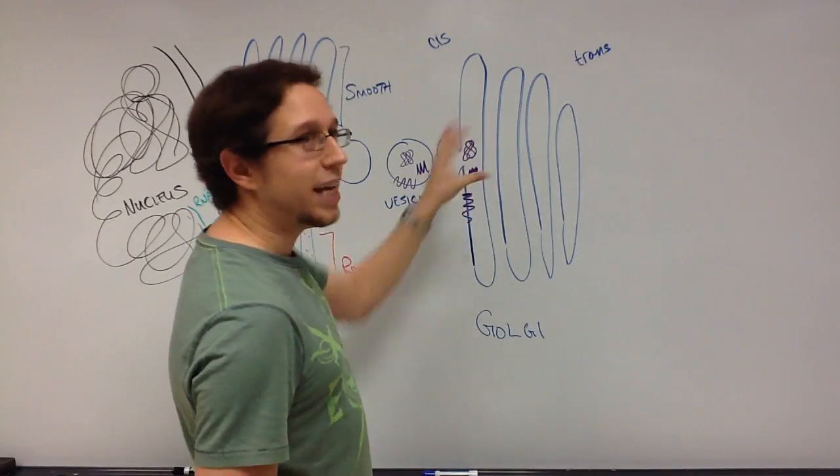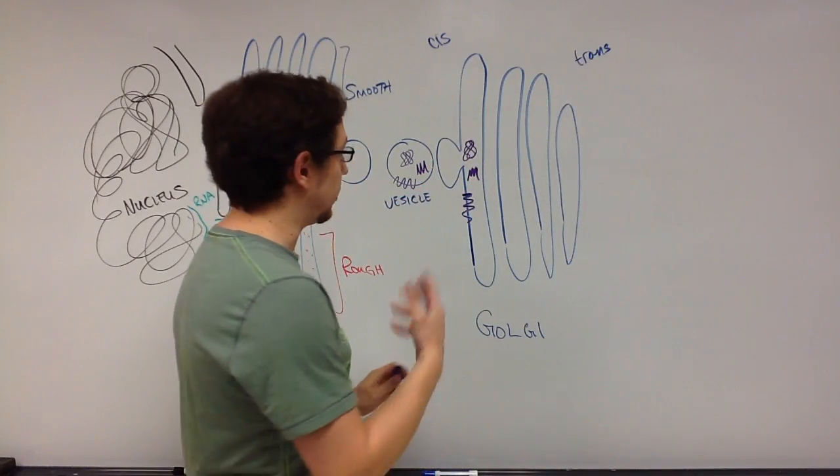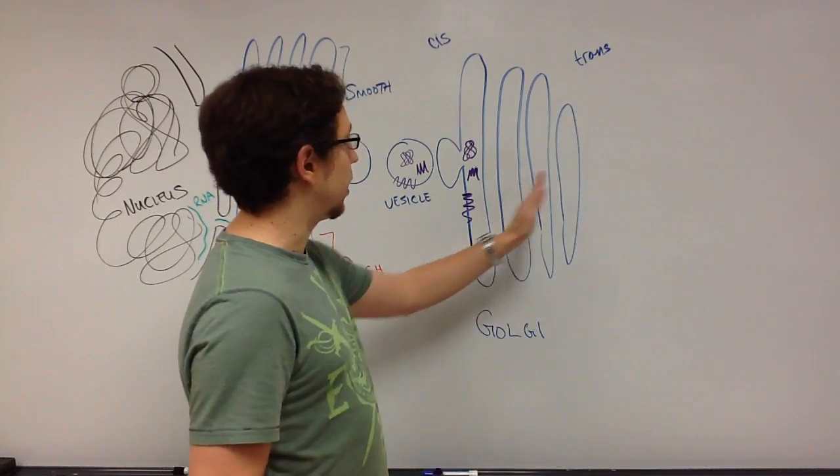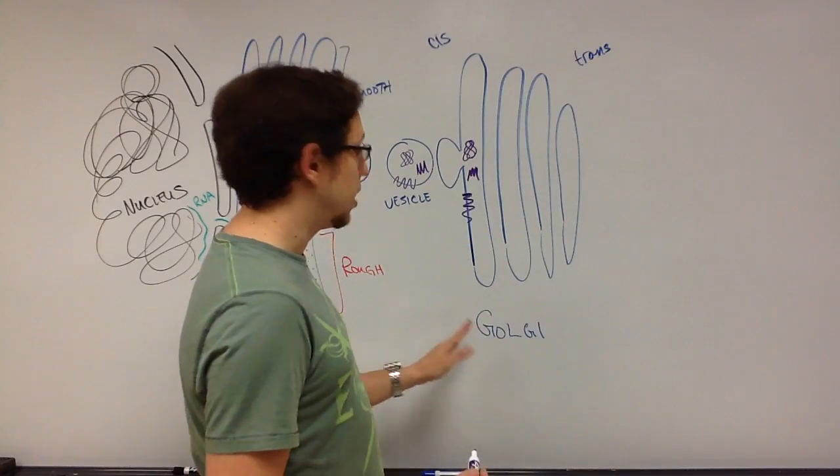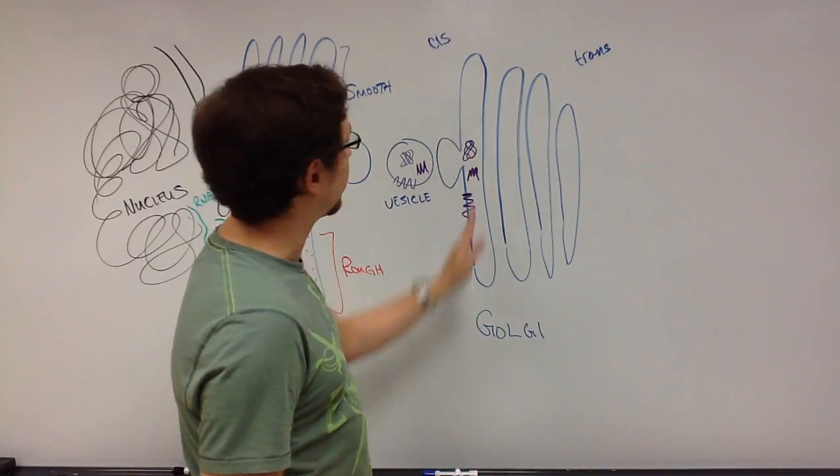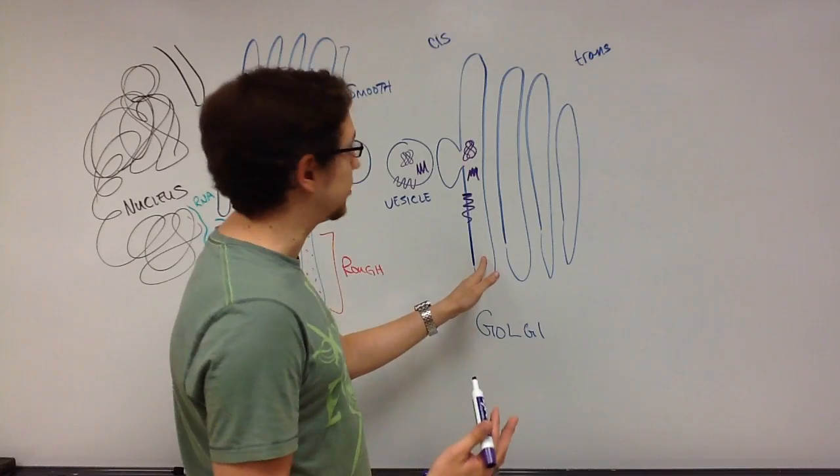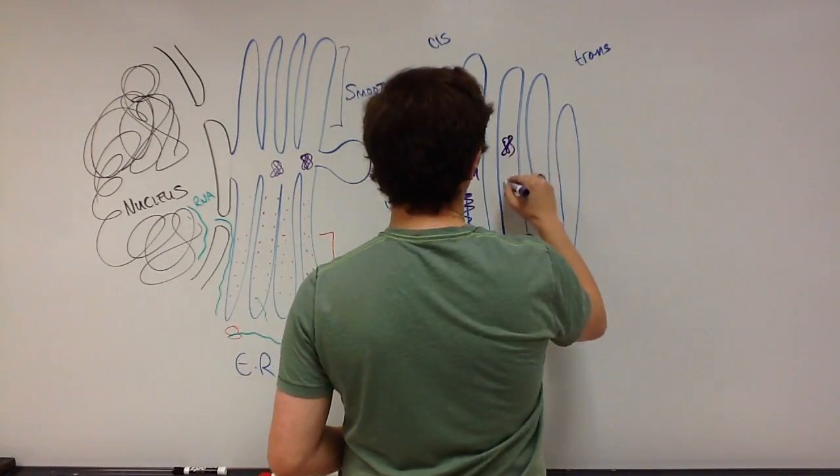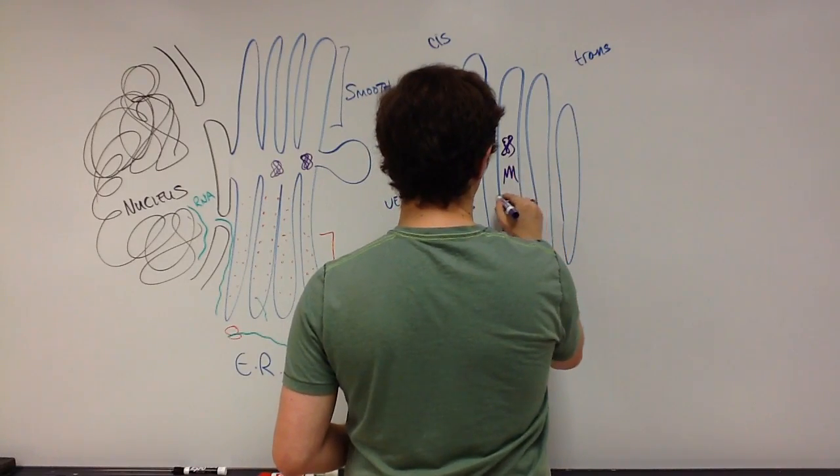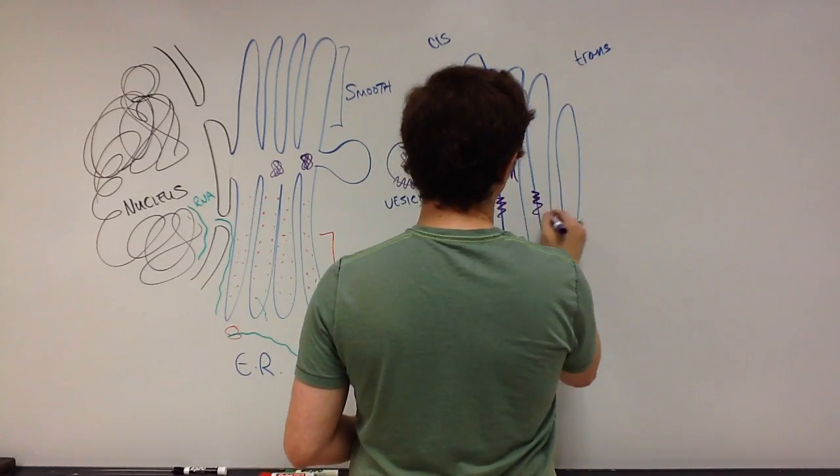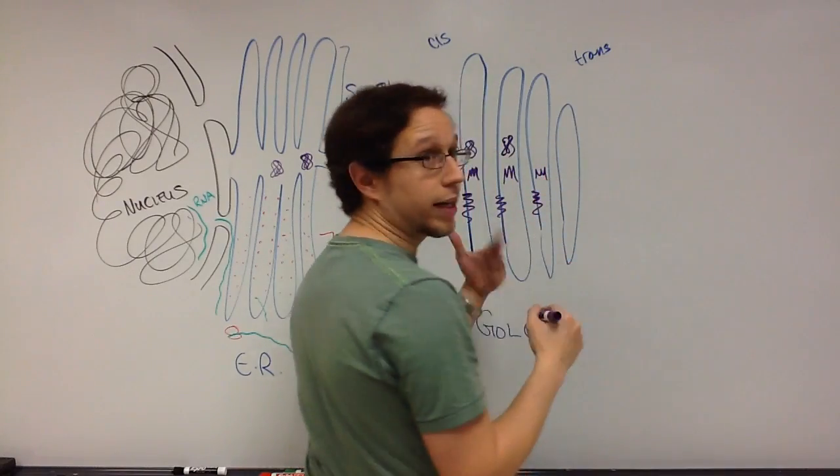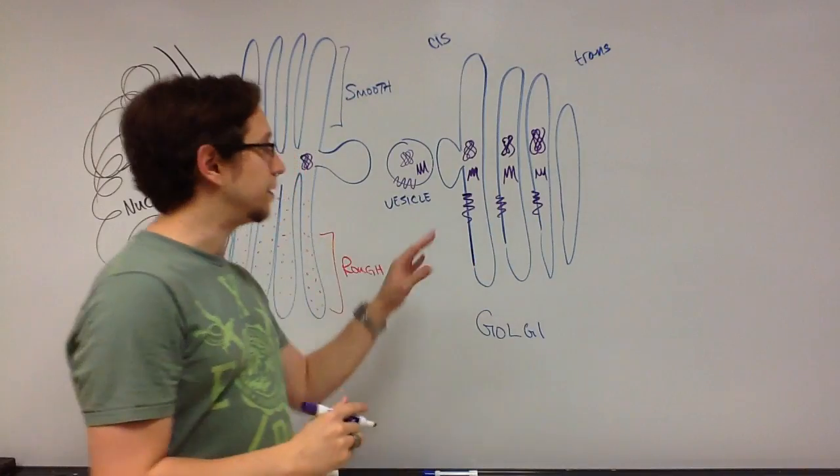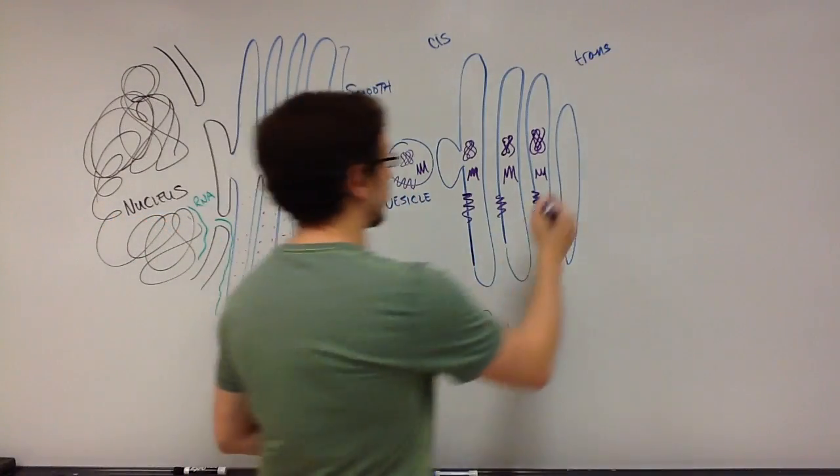Then remember that the cis face is going to move until it becomes eventually the trans face. It's going to merge and there are going to be enzymes here that modify these polypeptides, making them active. We call this movement of the cis face from left to right until it becomes trans, cis maturation. It's going to go from starting as the initial cis face and eventually this is going to become the trans face. What's really happening here is this face is moving and as it does, the enzymes inside the Golgi are modifying these and labeling them for where they need to go for trans.